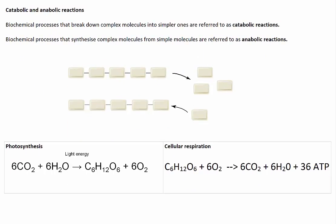Biochemical processes can be categorised by whether they build up or break down molecules. Those in which complex molecules are broken down into simpler ones are referred to as catabolic reactions. This occurs when food is digested — larger molecules such as fats, proteins, and carbohydrates are broken down into smaller molecules.